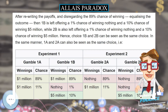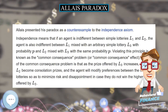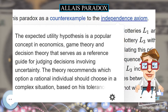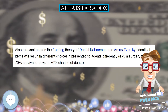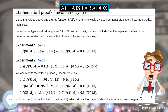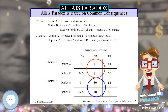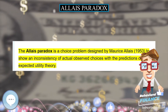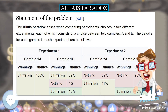Allais presented his paradox as a counter-example to the independence axiom. Independence means that if an agent is indifferent between simple lotteries L1 and L2, the agent is also indifferent between L1 mixed with an arbitrary simple lottery L3 with probability P, and L2 mixed with L3 with the same probability P. Violating this principle is known as the common consequence problem, or common consequence effect.